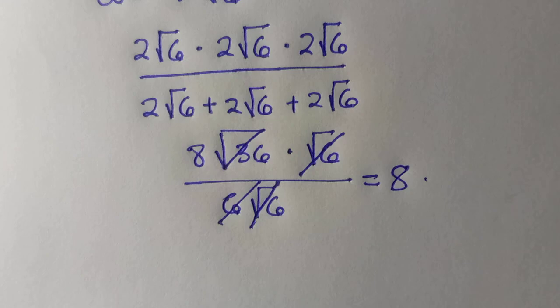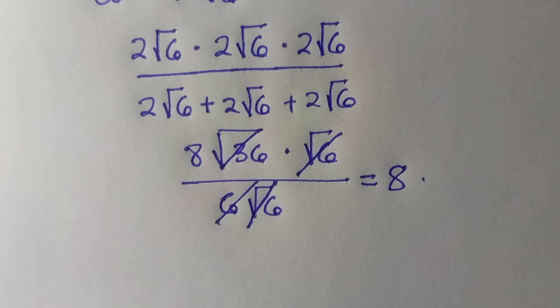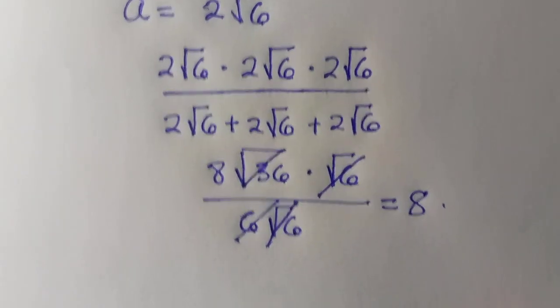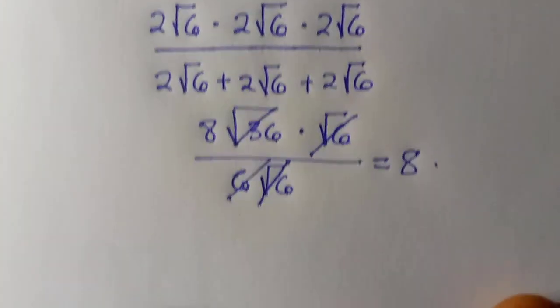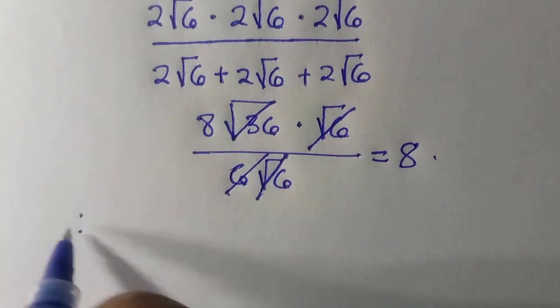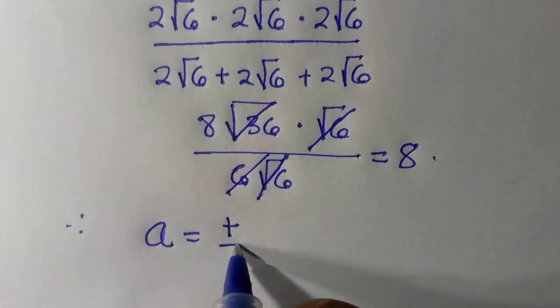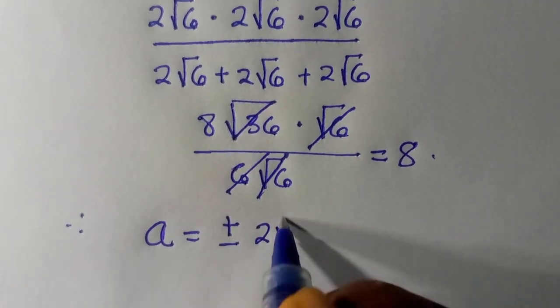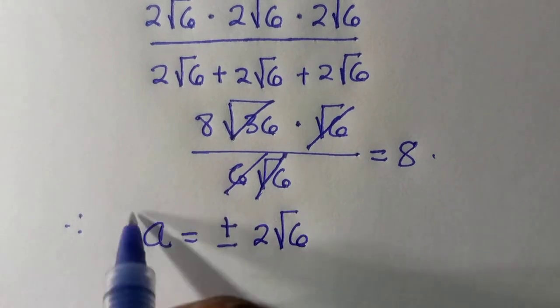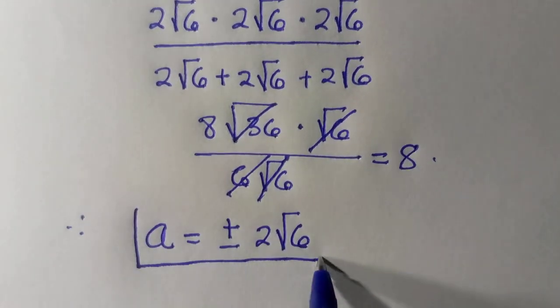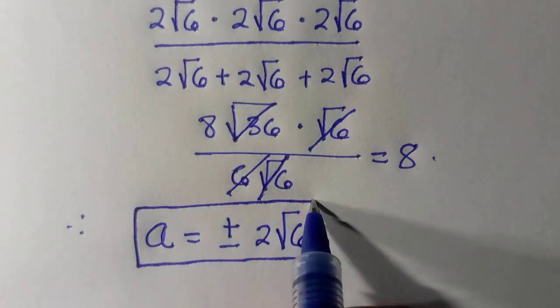And similarly, when we test for when this equals negative, we get the same result. So we now conclude that a equals plus or minus 2 root 6 are the only solutions that satisfy this problem.